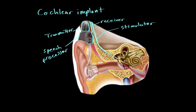The speech processor gets information through a small opening, which is the microphone. As sound waves come in, they hit the microphone, which converts them into an electrical impulse. That impulse is sent to the transmitter, which is outside the individual's skull. The transmitter then sends the information to the receiver, which is implanted inside the patient's skull. The receiver sends the information through the stimulator into the cochlea, which converts the electrical impulse into a neural impulse that travels down the auditory nerve to the brain to be processed.